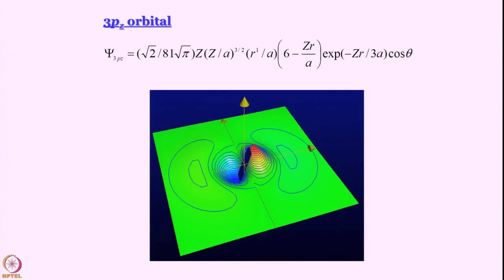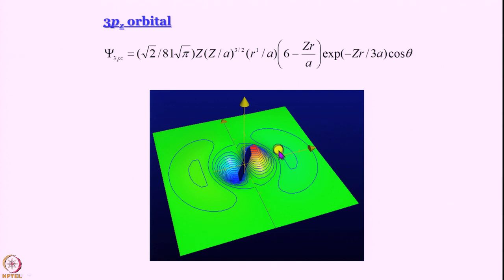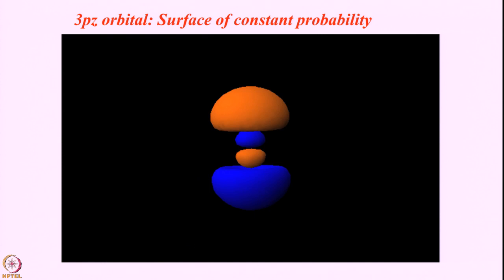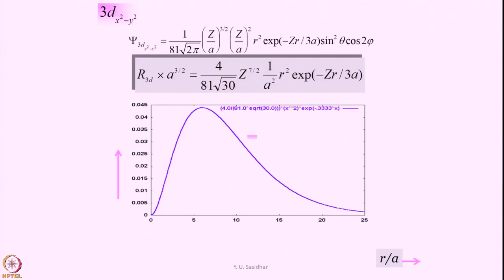The 3D picture of 3pz shows a big hill, a big trough, followed by a small trough and a small hill. In fact, the inner features are very small, but when multiplied by r² they blow up. Similarly, you can plot the 3pz orbitals yourself.